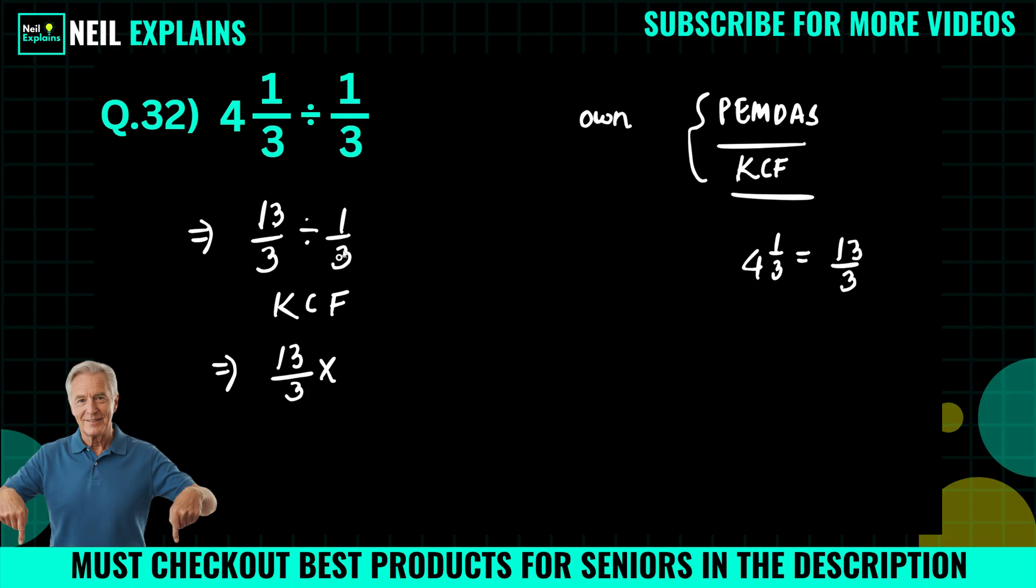And 1/3 will become 3/1. Now in the next step we will use simple mathematics: 3 times 1. Our question will be like this: 13 times 1, which equals 13.